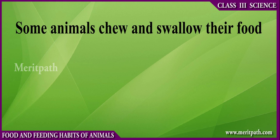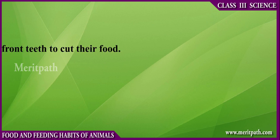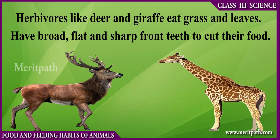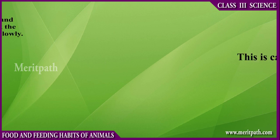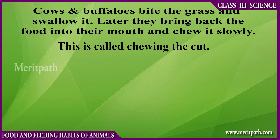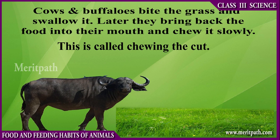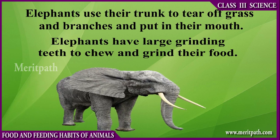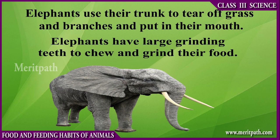Some animals chew and swallow their food, such as herbivorous animals. Herbivorous animals have broad, flat, and sharp front teeth to cut their food. Cows and buffaloes bite the grass and swallow it. Later, they bring back the food into their mouth and chew it slowly. Elephants use their trunk to tear off grass and branches and put it in their mouth.